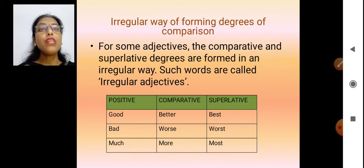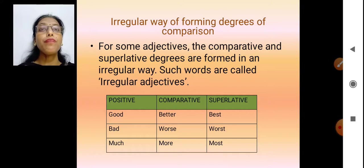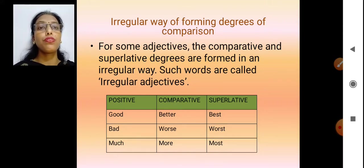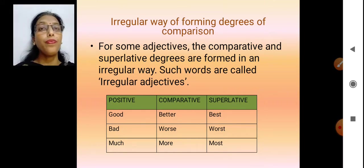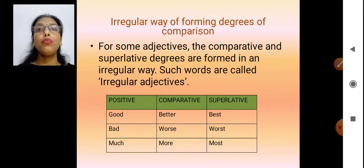Sometimes there is an irregular way of forming the degrees — there is no set defined rule for that. For example: good, better, best. Bad, worse, worst. Much, more, most. There is no regularity in these. So sometimes such adjectives are called irregular adjectives — they are formed in a way that has no uniformity.